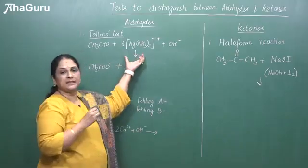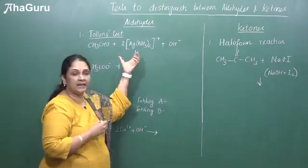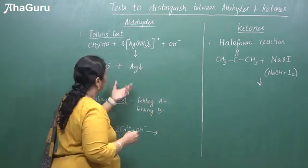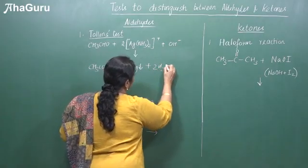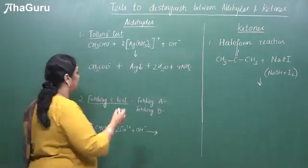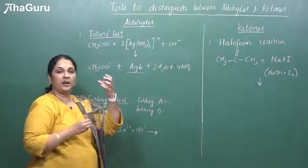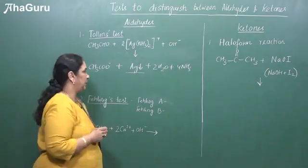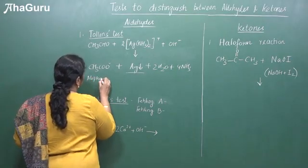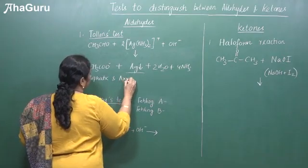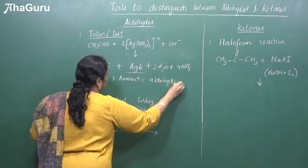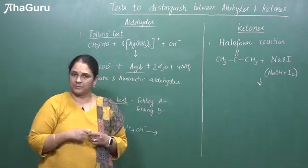Here we can see that silver is in the +1 oxidation state; it will get reduced to elemental silver (Ag), which gets precipitated along the walls of the test tube. We also get water and ammonia as products. This test will be answered by both aliphatic and aromatic aldehydes — so even if we take benzaldehyde, the Tollen's test will respond to that.